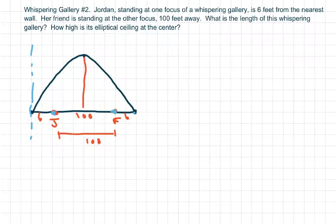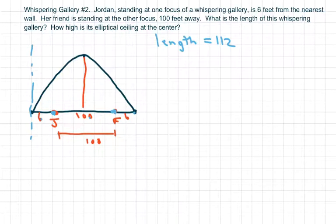foci right here, so six plus 100 plus six. So the length equals 112. Now to find a, because we're going to have to find our b part, the minor axis.